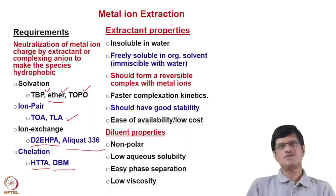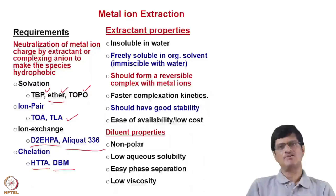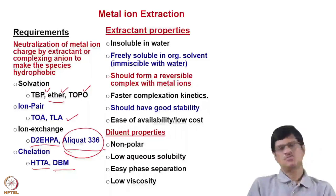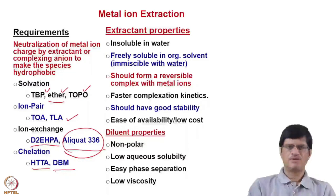Along with the extractant, a diluent is also needed. The diluent should be non-polar, have low aqueous solubility, have easy phase separation ability, and have low viscosity. Room temperature ionic liquids are highly viscous, which is why they are not proposed for large-scale separation. Some extractants like Aliquat 336 are very viscous and need to be diluted properly with a suitable diluent so that extraction can be done with favorable kinetics and within an acceptable time limit.